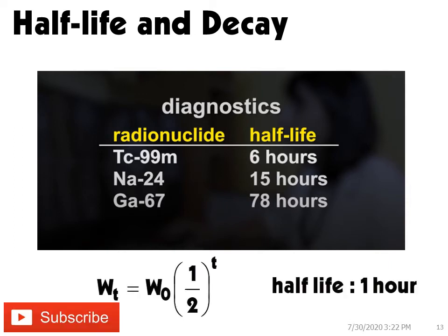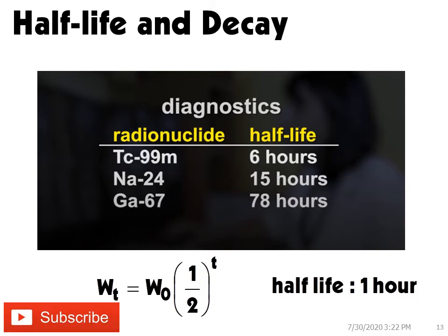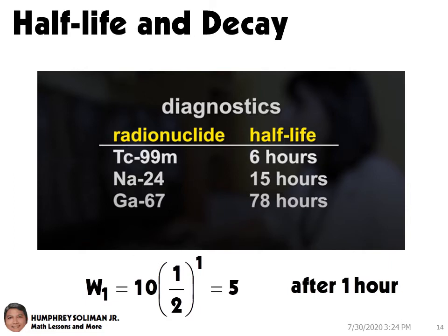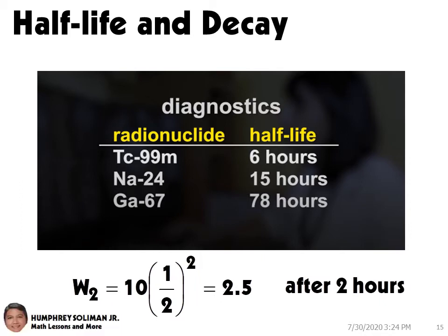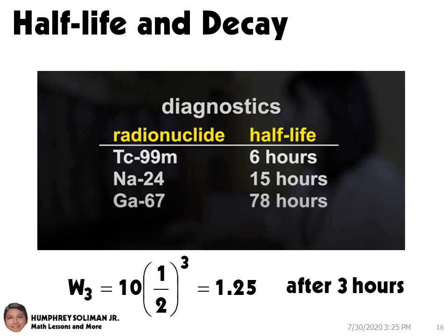Let's say we have a radioactive substance and its half-life is one hour. This means it will take one hour to decay half of the substance. So if the initial weight of the substance is 10 grams, after one hour it will have 5 grams left, after two hours it will have 2.5 grams left, after three hours it will have 1.25 grams left, and so on.